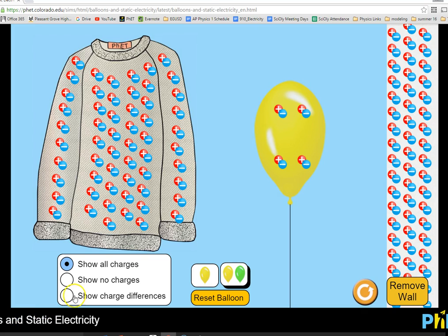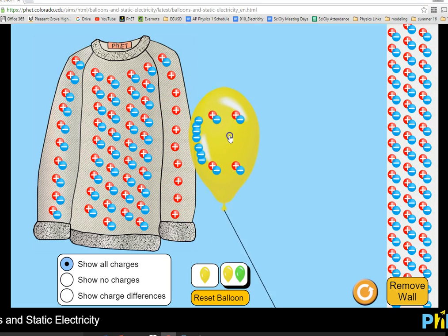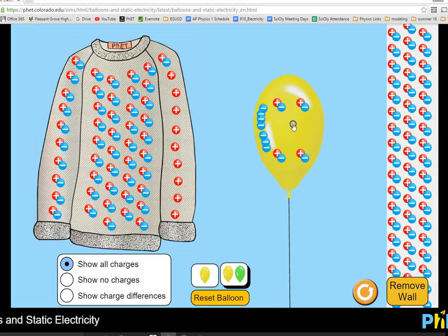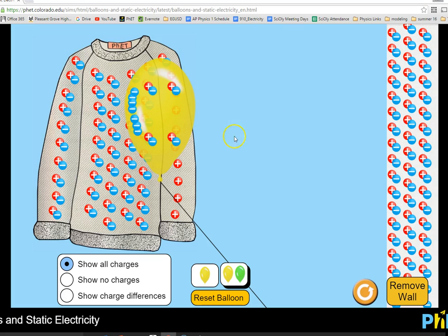So what I have here is a neutral shirt, equal positives, equal negatives, a neutral balloon, and a neutral wall. I can take this balloon and rub it on the shirt. And notice when I rub it, it takes on some of the negatives off the shirt.